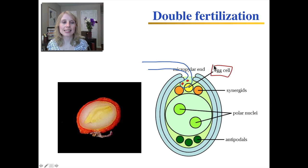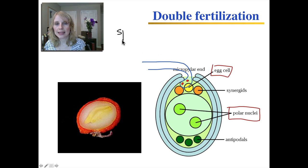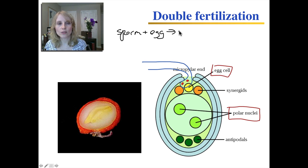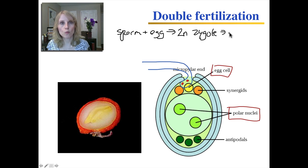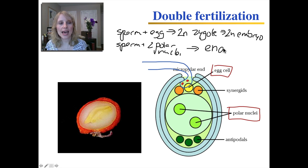One sperm fertilizes the egg. The second sperm fertilizes the two polar nuclei that make up the central cell. The sperm that fuses with the egg will become the diploid zygote, which then develops through mitosis into the diploid embryo. The second sperm, which fuses with the two polar nuclei, will become a tissue called the endosperm.